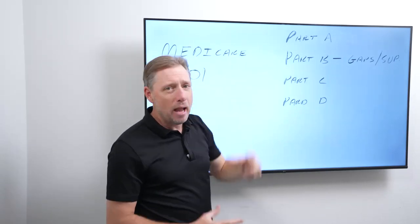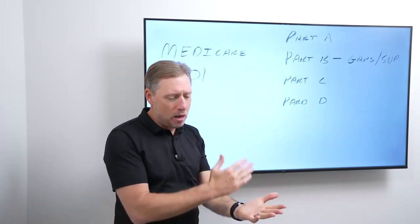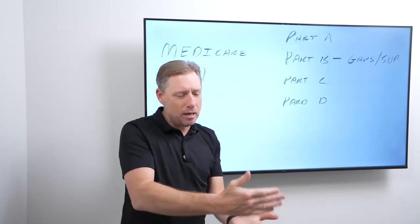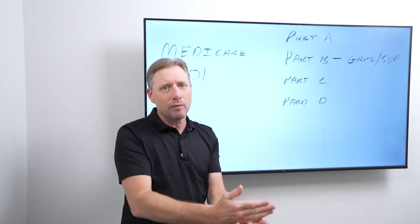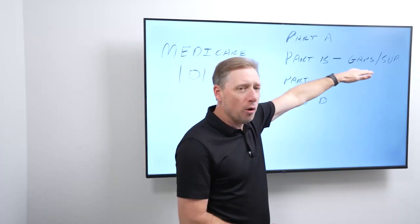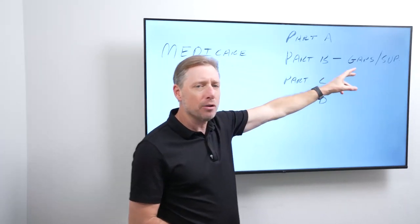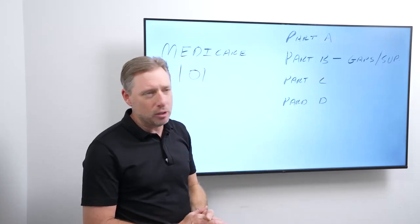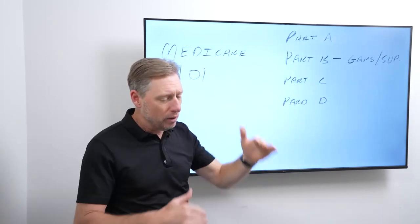So Part B has what we call gaps, meaning Part B doesn't cover everything you may need by going to your doctor's office for doctor visits and that sort of thing. So what you do is you buy what's called a Medicare supplemental policy to fill the gaps in covers that Medicare Part B does not cover.